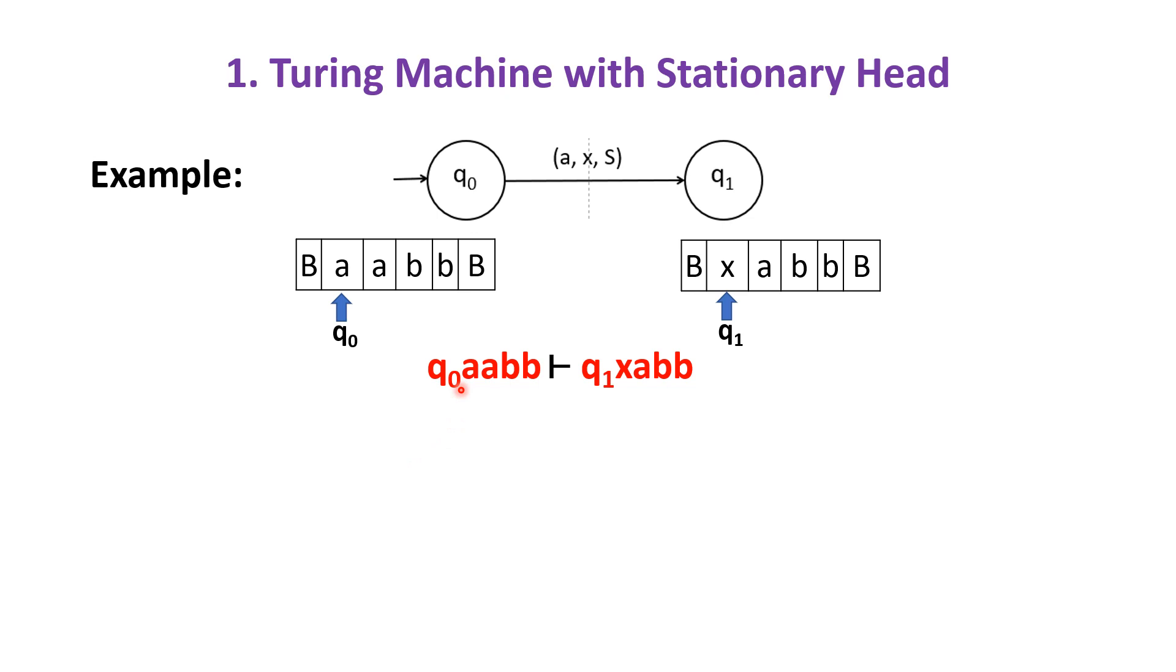The instantaneous descriptions are q0 A A B B goes to q1 X A B B.